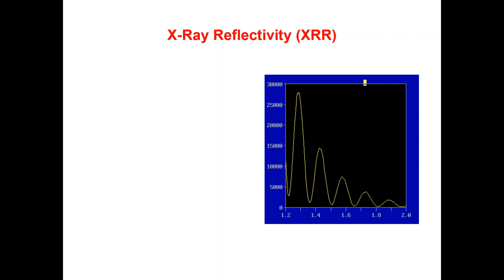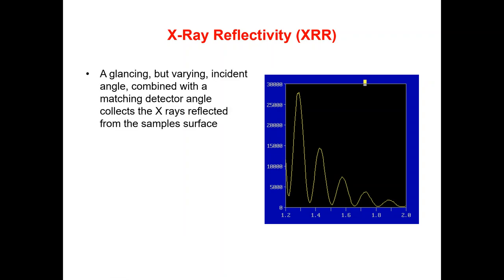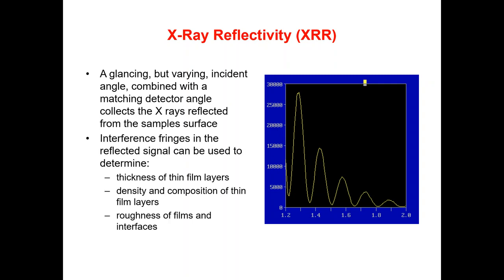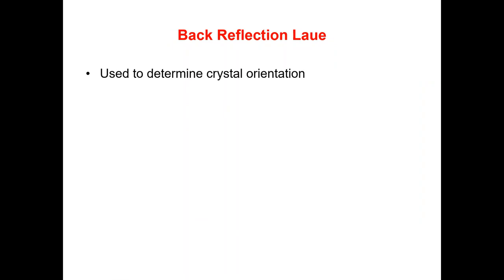X-ray reflectivity, called XRR, uses glancing but varying incidence angles combined with a matching detector angle that collects X-rays reflected from the sample surface. The interference fringes in the reflected signal can be used to determine the thickness of film layers, the density and composition of thin film layers, and the roughness of films and interfaces.